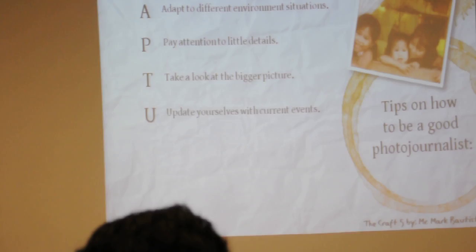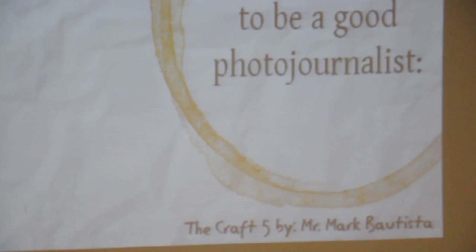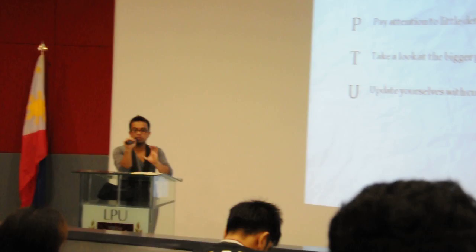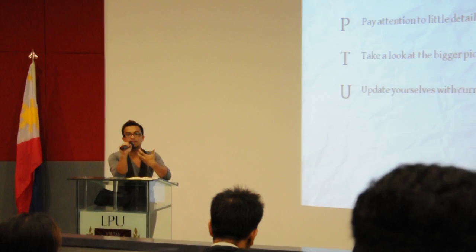U is for: update yourselves with current events. That is very important, especially when you want to become a photojournalist, because this is where you will base what you will be taking pictures of. So when you know what is happening — like, if I was a student photojournalist and there was an event, but I wasn't informed or didn't get involved with it, I wouldn't have the chance to take the picture. So you have to be involved and be updated with what's happening.